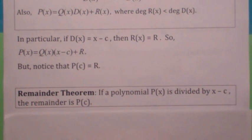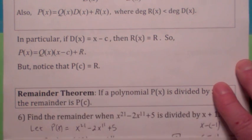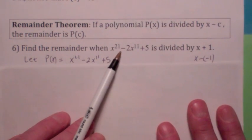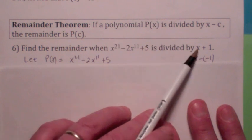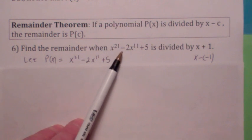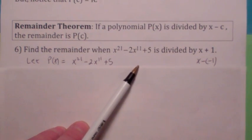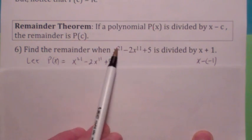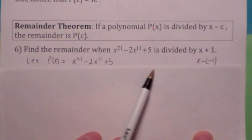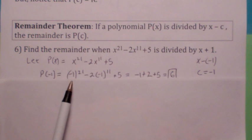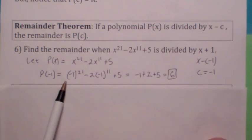The remainder theorem says: when you divide a polynomial by a linear factor, the remainder r is just the function value p of c. That can be very helpful, especially on a quiz. For example: what's the remainder when you divide this horrible polynomial by x plus 1? You don't really want to do long division — there are a lot of missing terms. But if you define the polynomial to be p of x, then c becomes negative 1 since this is x minus negative 1. So the remainder is just p of negative 1. It turns out p of negative 1 equals 6, so that's the remainder.